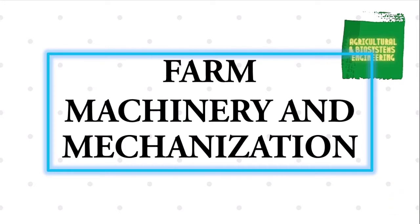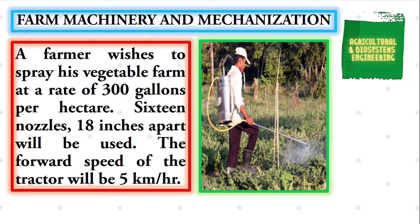This time, we will be solving this problem. A farmer wishes to spray his vegetable farm at a rate of 300 gallons per hectare. 16 nozzles, 18 inches apart will be used. The forward speed of the tractor will be 5 kilometers per hour.